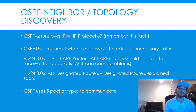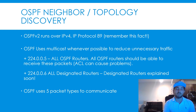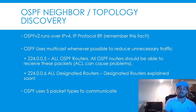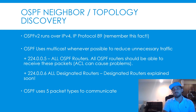And then you have 224.0.0.6, which is all designated routers in the OSPF domain. We'll cover designated routers in detail in an upcoming lesson. For now, just commit these addresses to memory — .5 is all OSPF routers and .6 is all designated routers.